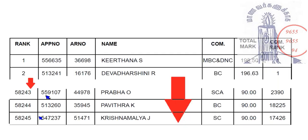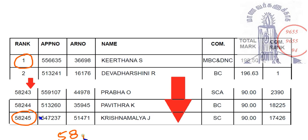If you look at the General rank merit list, it will be in the range of 58 to 605. If you look at the maximum final round, the first application will also be 58 to 605. If you look at the 500 rank, you will be able to get all of these rounds.